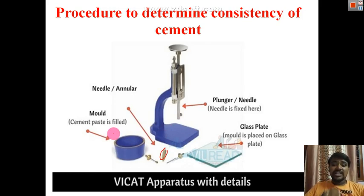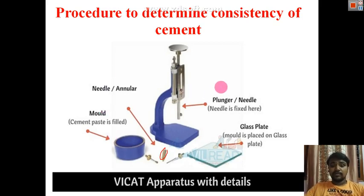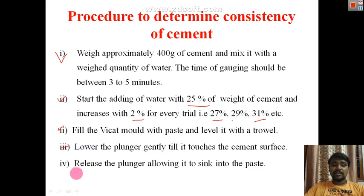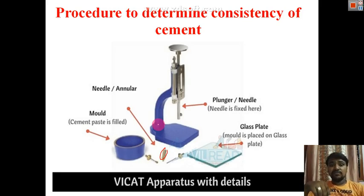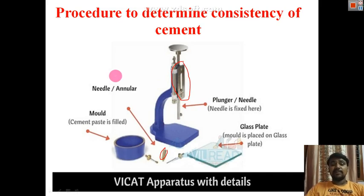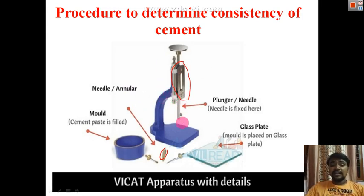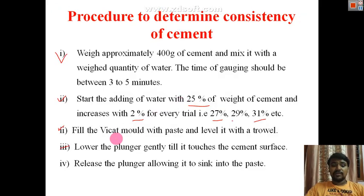Release the plunger gently from the releasing point so it touches the cement paste surface. Then release the plunger allowing it to sink freely into the paste. After a few seconds, take the reading — which is the depth of penetration from the bottom of the mold. Initially you may get readings of 25, 26, 27, 28, or 30 mm.